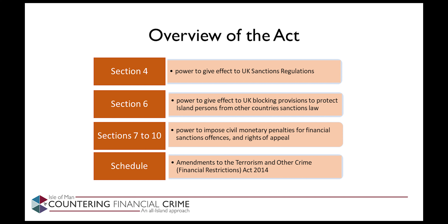This specifically includes the sanctions imposed by the USA against Iran and Cuba, as the UK and the Isle of Man do not currently have the same level of sanctions imposed against those countries. Sections 7-10 are the provisions concerning civil monetary penalties. Sections 11-15 contain provisions providing rights of appeal against Treasury decisions, saving provisions, protection for acts done for the purposes of complying with sanctions law, and standard provisions concerning data protection and Crown application. Section 16 and the schedule to the Act contain the amendments to the Terrorism and Other Crime Financial Restrictions Act 2014.